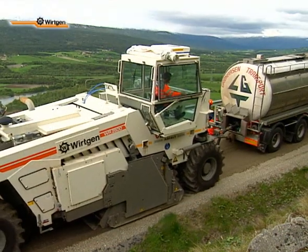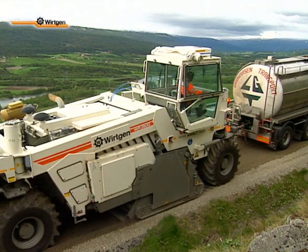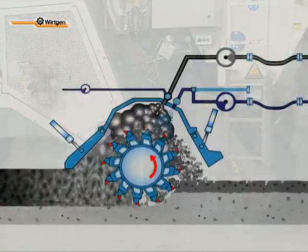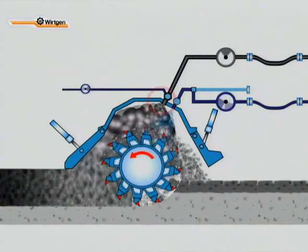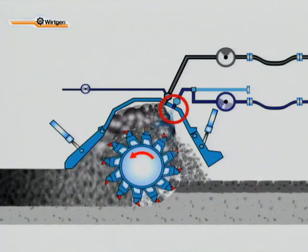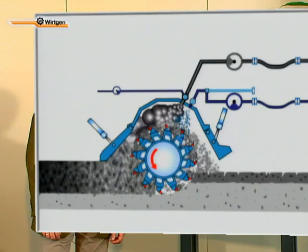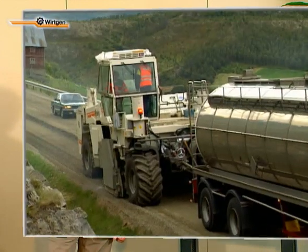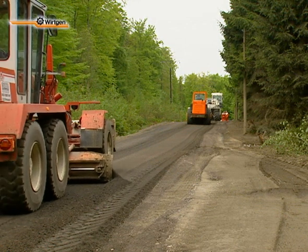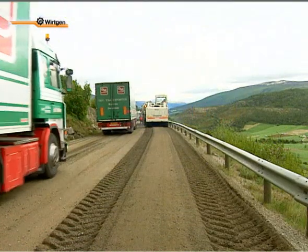At this construction site, the Wirtgen recycler WR2500 recycles the existing road surface construction by simultaneously granulating and mixing in the foamed bitumen and water. This computer animation shows how the material is processed on the spot. The hot bitumen is foamed in 16 individual expansion chambers of the spray bar and then injected into the mixing chamber. At the same time, water is added to achieve the optimum moisture content. This process can also be successfully carried out using the Wirtgen recycler 2200CR. Regardless of which machine is used, the recycler leaves in its trail a new, high-quality surface layer. After profiling and compaction, it is immediately ready for traffic use.